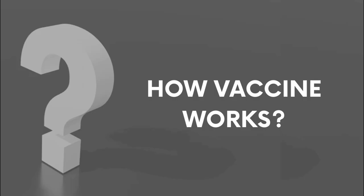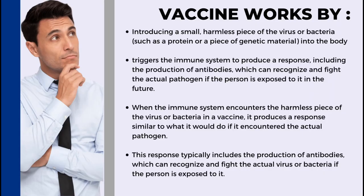So how does a vaccine work? Vaccines work by introducing a small, harmless piece of the pathogen — such as a protein or a piece of genetic material — into the body, which triggers the immune system to produce a response, including the production of antibodies.